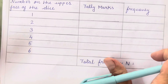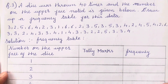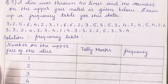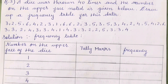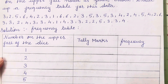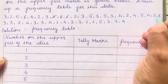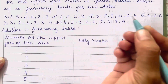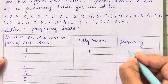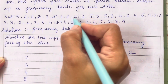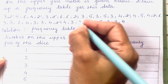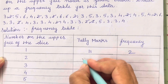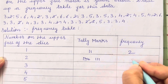A dice was thrown 40 times and the number on the upper face noted is given below — draw up a frequency table of this data. We have to count the numbers from 1 to 6. For 1: counting gives 1 and 2 — frequency is 2. For 2: counting gives 1, 2, 3, 4, 5, 6, 7, 8 — frequency is 8.